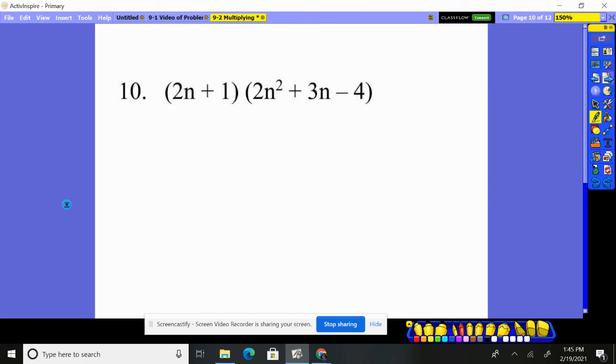Number 10. Same exact thing we're going to do: distribute it through. Two pieces, binomial times three pieces, trinomial is going to give us six pieces.